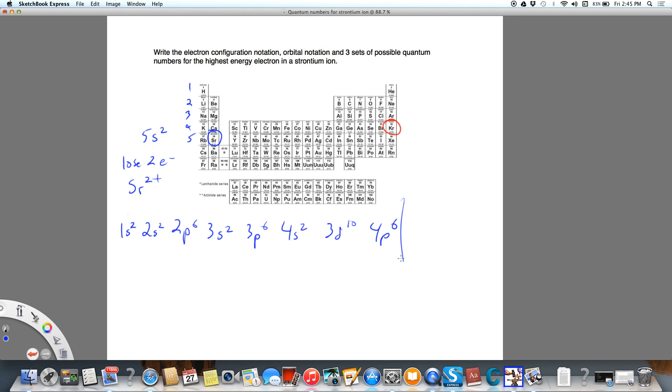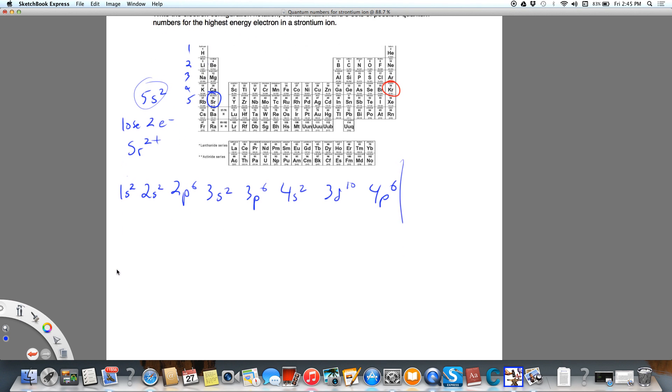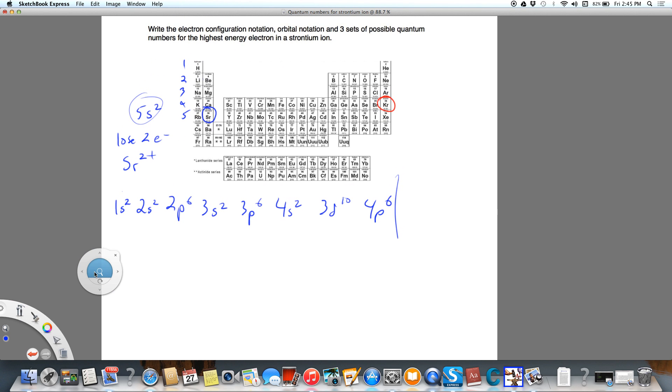Now this would be where we would stop for the ion. If we were going to do neutral strontium, then we would add the 5s² to that. Now we want to draw the orbital notation, and that's the one with the boxes. I'm going to just do it as individual lines.